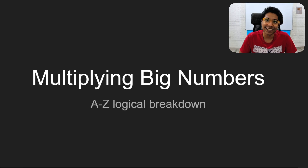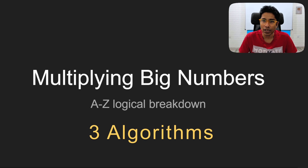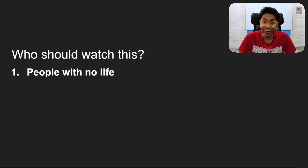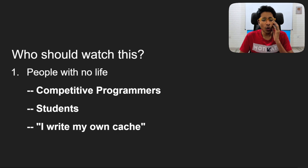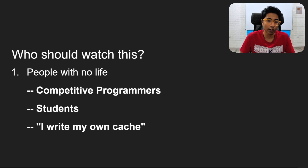Hi everyone, this is GKCS. In this video we'll talk about multiplication of two very large numbers. Specifically we'll talk about three algorithms, and the last one will be Fast Fourier Transform. This video is not for everybody — if you are a person interested in algorithms in general, or a student learning Fast Fourier Transform, then this video will be relevant.